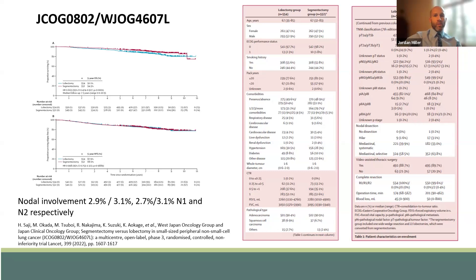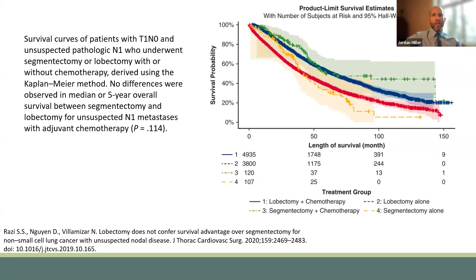At the time of resection, if an incidental node was found, it did require proceeding with lobectomy at the time of frozen section. Some additional studies have recently been published based on the National Cancer Database, looking at patients with clinical T1N0 disease who were found to have pathologic N1 or N2 disease at the time of lobectomy or segmentectomy. This was a study published by Razi in the Journal of Thoracic and Cardiovascular Surgery in 2020, and what this demonstrated was that there was no difference in overall survival in lobectomy or segmentectomy when patients were treated with adjuvant systemic therapy.